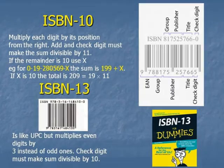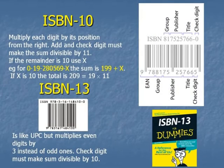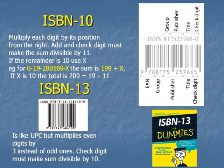But dividing by 11 means you could have a remainder of 10, and because of that, you sometimes see an X. X, Roman 10, is used to denote 10. So for this number here, the sum is 199 plus X. If X equals 10, it would be 209, which is divisible by 11.